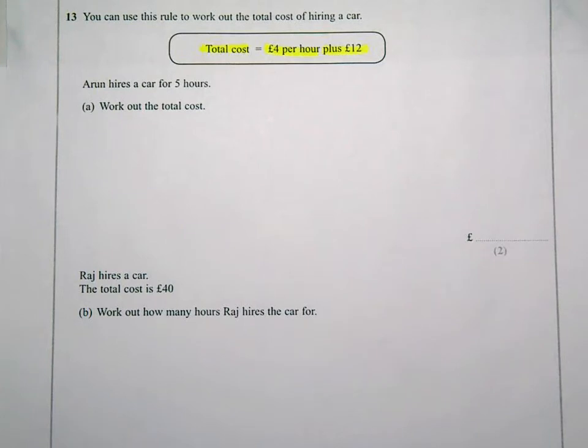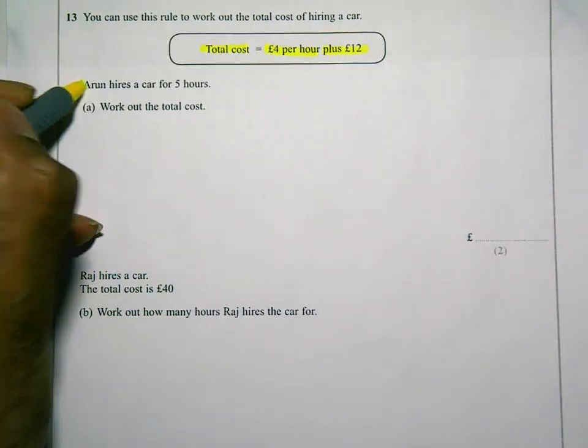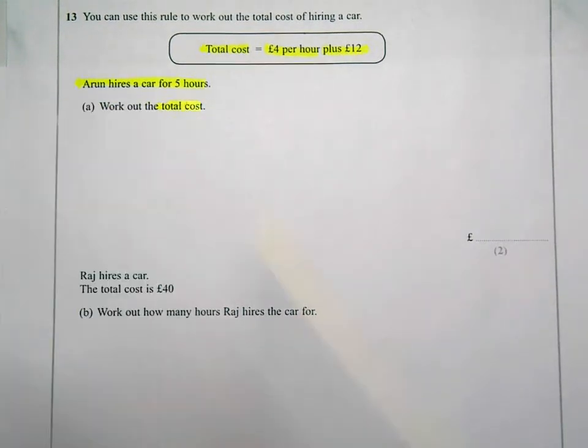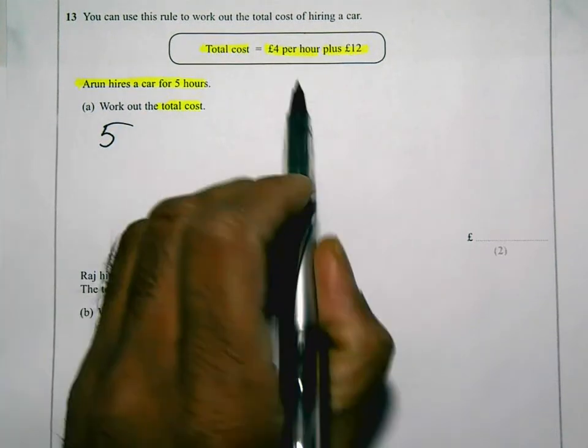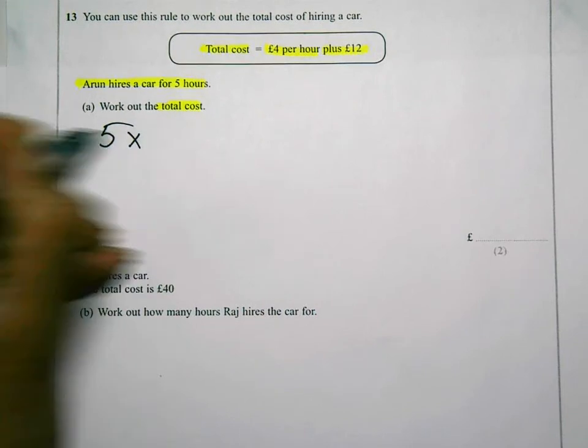So it says here, Aaron hires a car for five hours. Work out the total cost. He hires it for five hours, and it's four pounds per hour. So I'm going to times that by four, and then the answer I get to that I'm going to add twelve.